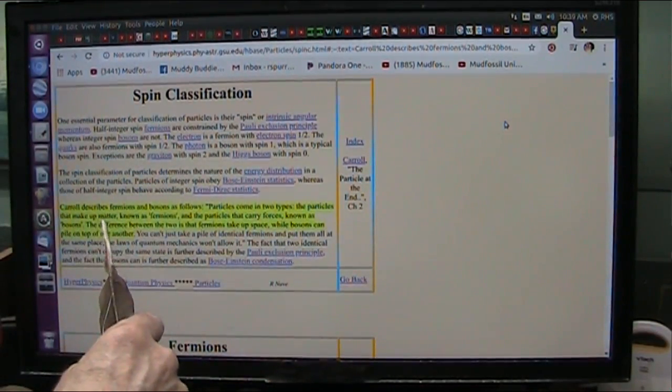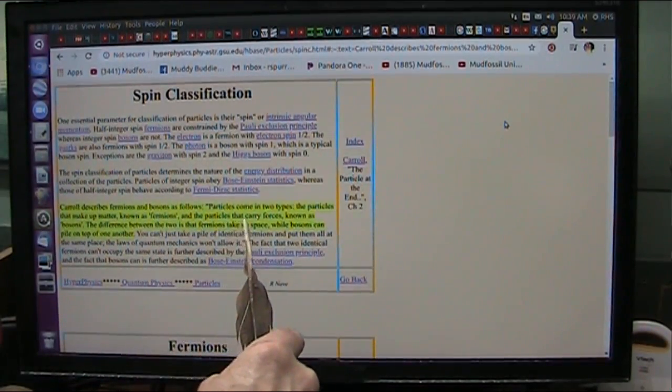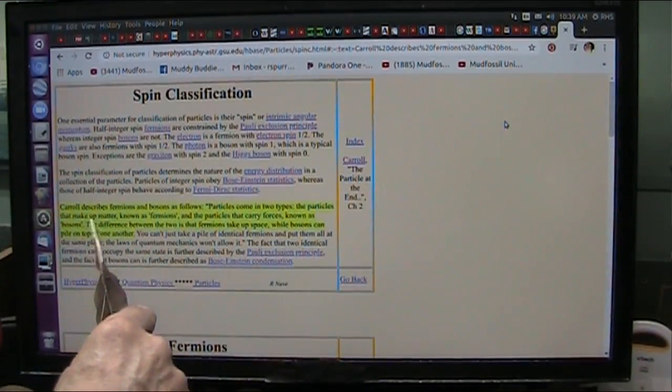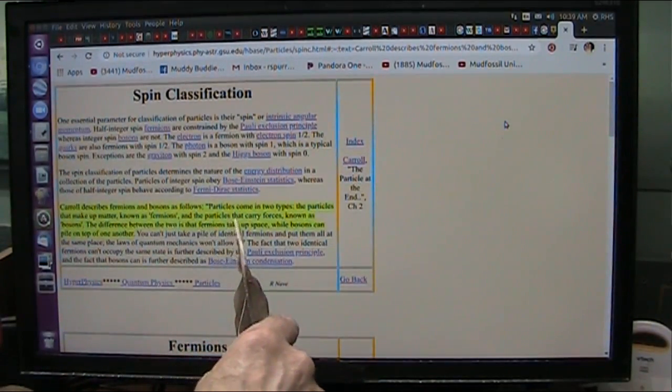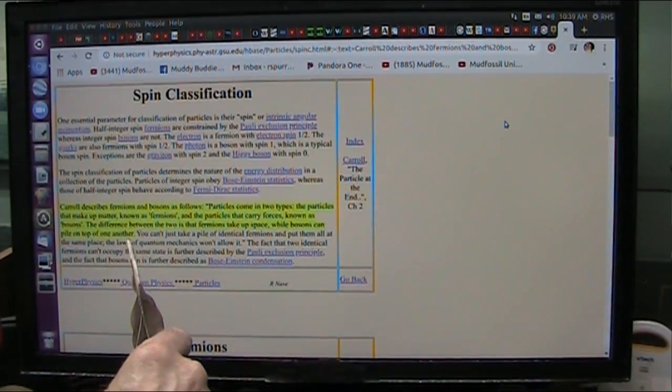The particles that make up matter, known as fermions, and the particles that carry these forces, known as bosons. The difference between the two is that fermions take up space, while bosons can pile on top of one another.